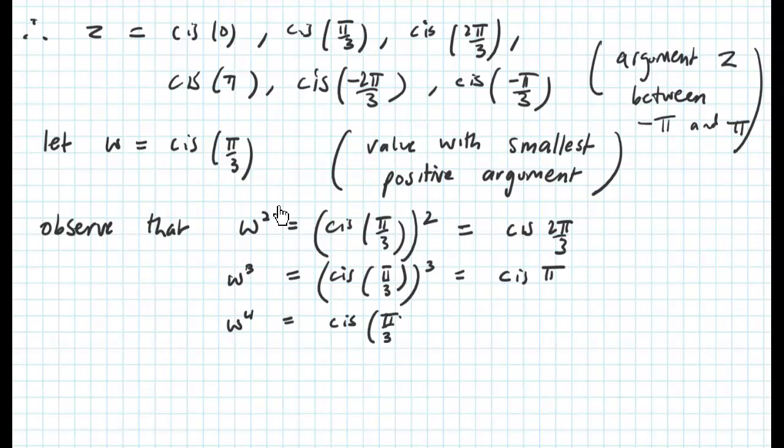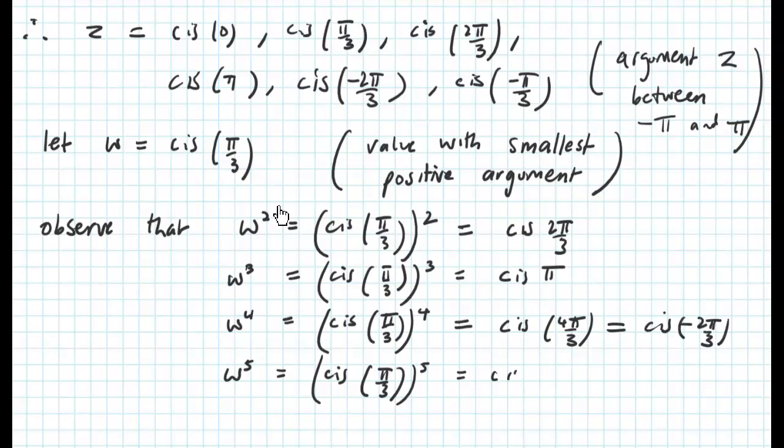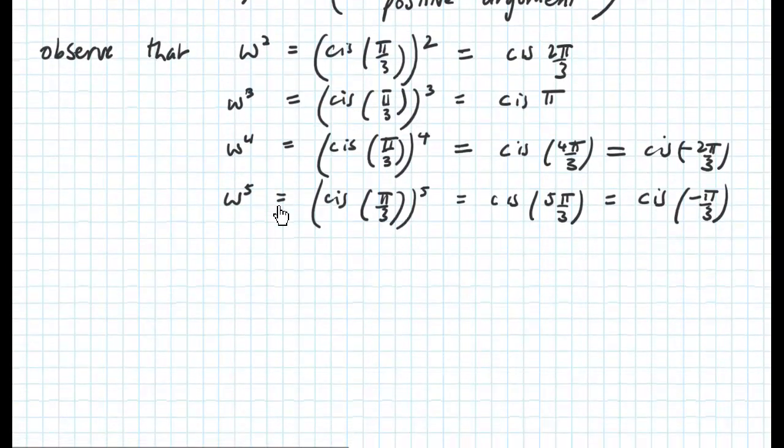w to the power of 4 becomes cis 4 pi on 3, which simplifies to cis minus 2 pi on 3. Finally w to the power of 5 becomes cis 5 pi on 3, which simplifies to cis minus pi on 3.